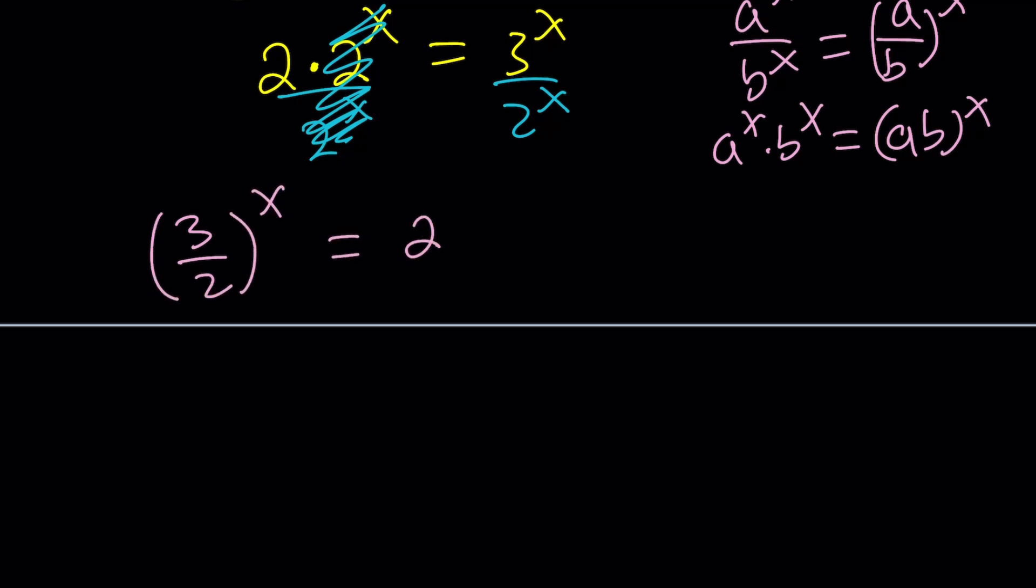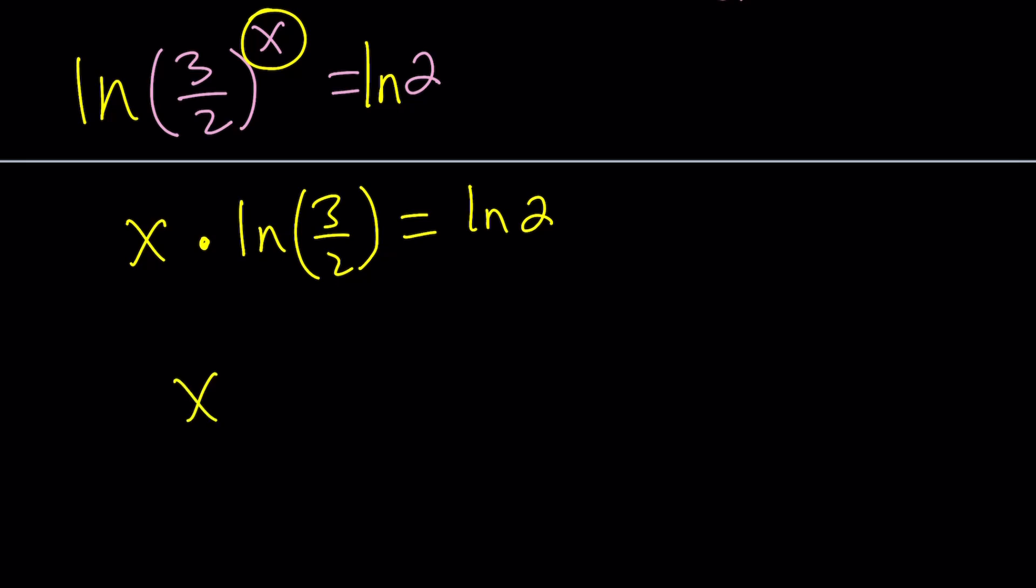We already talked about the multiplication property, but didn't talk about division. It's the same thing. If you divide a^x by b^x, you just write it as (a/b)^x, or vice versa. And the same thing goes for multiplication, right? Okay. So those are the properties when the exponents are equal. So this means (3/2)^x = 2. And now we can go ahead and just natural log both sides.